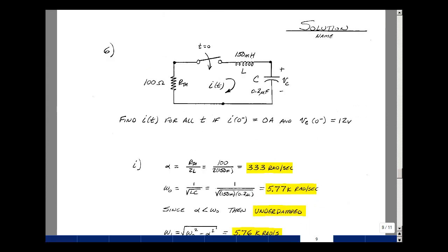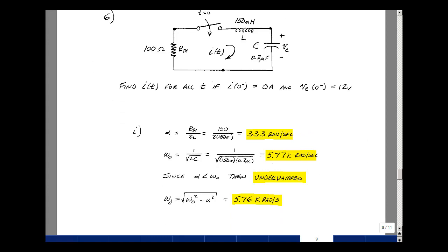Problem number six is an RLC circuit with a single-pole, single-throw switch closed at t equals zero, given two initial conditions, the current flowing in the circuit and the voltage across the capacitor. Using the formula sheet, we could calculate the value of alpha and omega naught. Here, I've got a resistance of 100 ohms and an inductor of 150 millihenries. That gives me 333 radians per second. The value of omega naught is 1 over the square root of LC. L is 150 millihenries and C is 0.2 microfarads. That gives me 5.77 kiloradians per second. Since alpha is smaller than omega naught, we have an under-damped system. Now, using our formula sheet again, we could calculate the value of omega D, which is omega naught squared minus alpha squared. And that turns out to be 5.76 kiloradians per second.